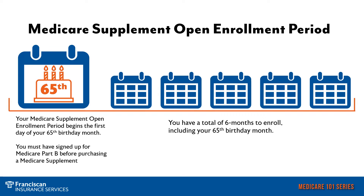When you are in your Medicare Supplement open enrollment period, it starts the month you take your Part B and then you have a total of six months to enroll. So you have the month you take your Part B, and then that open enrollment period will last for a six-month period to enroll in any Medicare Supplement without health underwriting. Once you are outside of that six-month window, you could be subject to health underwriting depending on whether or not you qualify for a special enrollment or guaranteed issued rights.